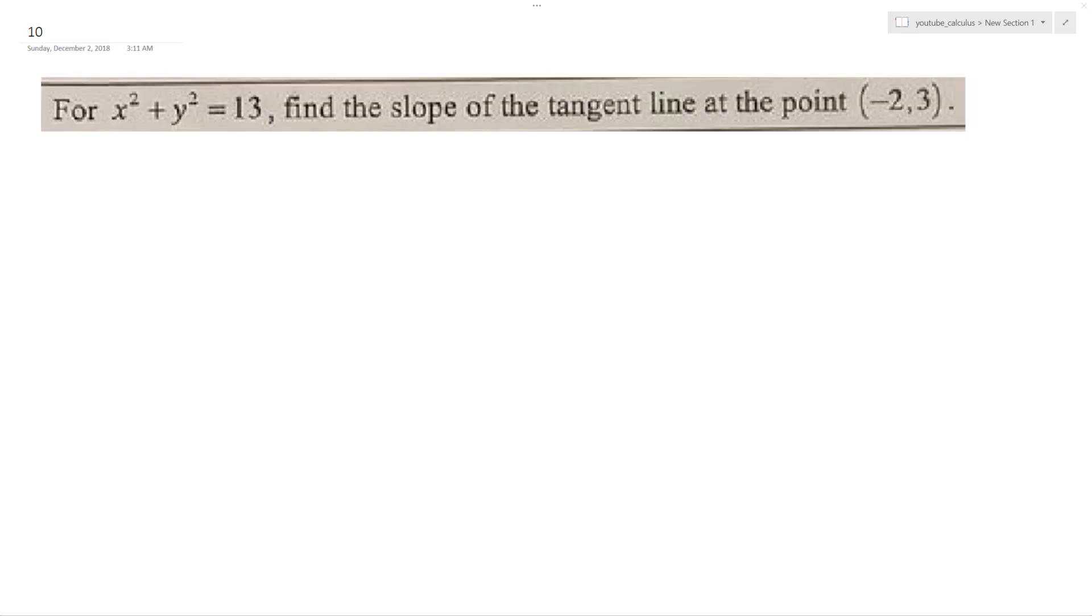All right, so we've got x squared plus y squared equals 13. We want to find the slope of the tangent line at the point negative 2 comma 3.